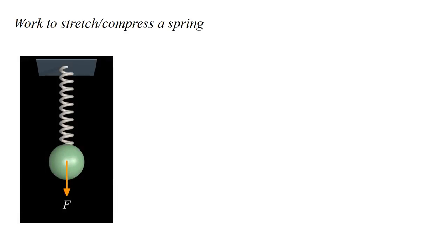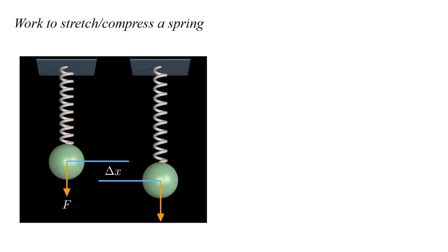Now let's look at the other dynamical system we've studied: a mass on a spring. Let's consider the work required to initialize this system by stretching or compressing the spring. Suppose the spring is stretched and we are applying a force to offset the spring force. Then we stretch the spring an additional distance delta x. The work done, call it delta w, is approximately the force f times the distance delta x.